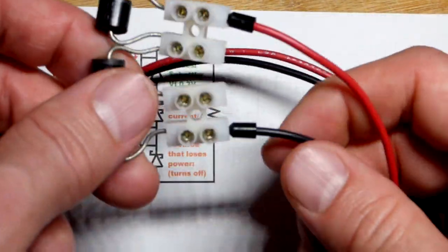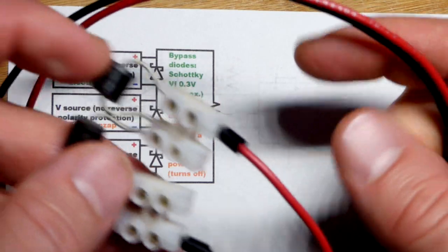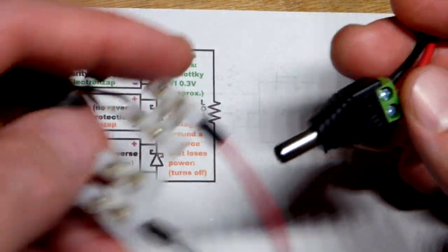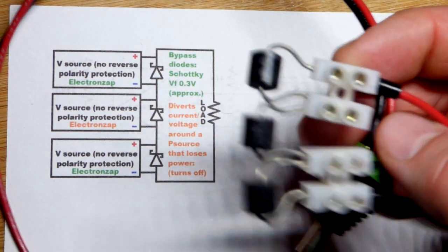This is actually going to be what we're going to attach the load to. So that's a direct connection straight across right there. It's a barrel plug there so I can plug it into a load.